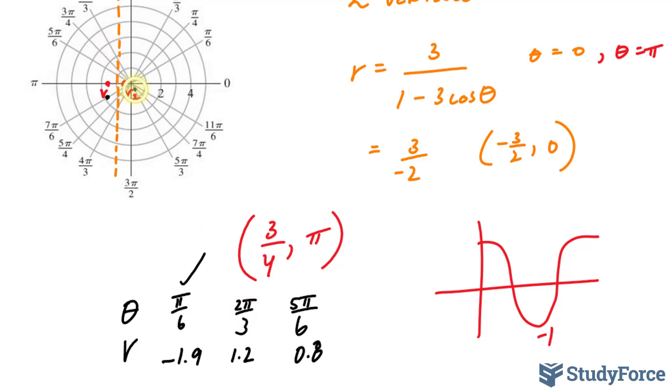Now we have 2 pi over 3. That's in this direction, and that's 1.2. So we'll go in the direction that it is traveling. 1.2 is approximately there.